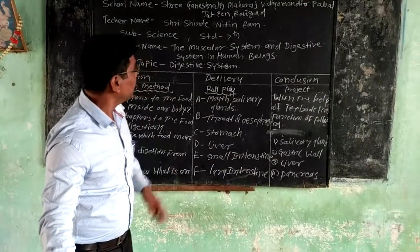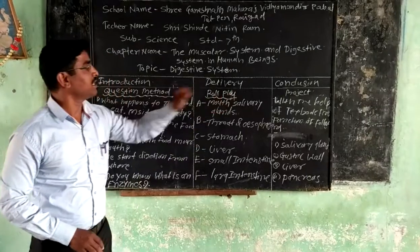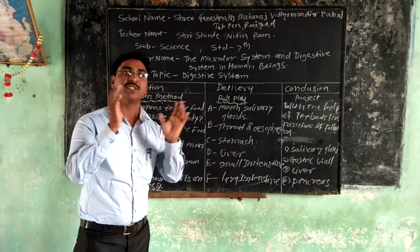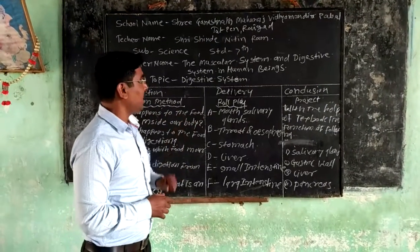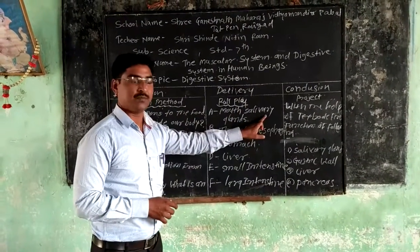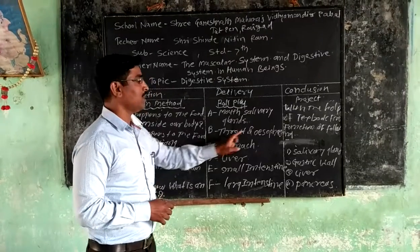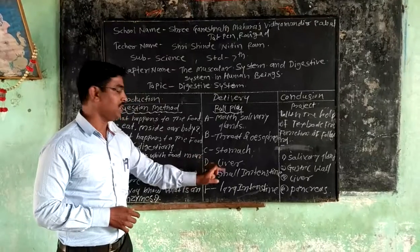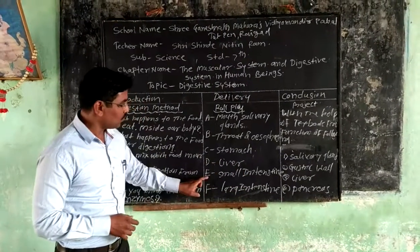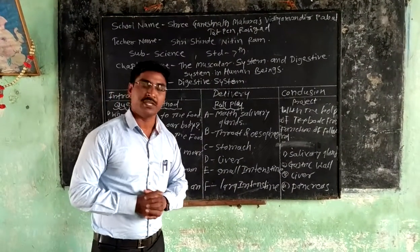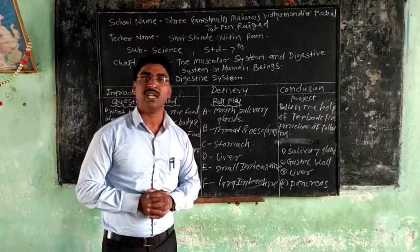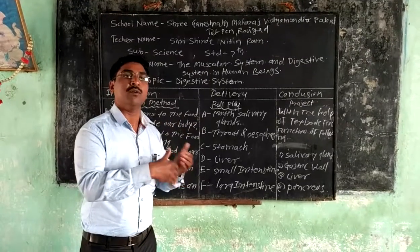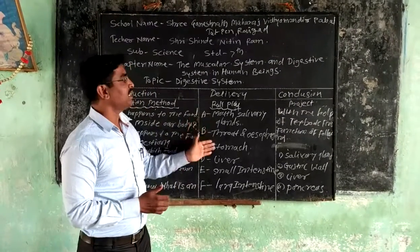In delivery, I am also using the method of role play. I am choosing 6 students. Student A is given mouth and salivary glands. Student B is given throat and esophagus. Student C is given stomach. Student D is given liver. Student E is given small intestine. Student F is given large intestine. Each student or performer should cover their part one by one and enact their roles.